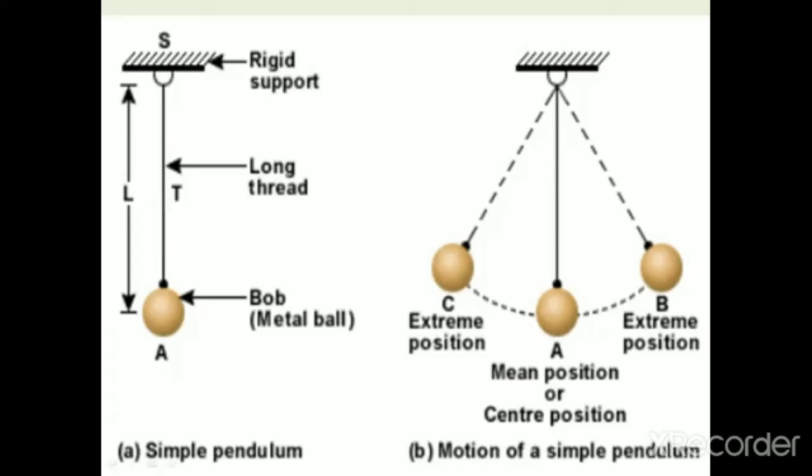One oscillation will be complete when this pendulum moves from B to C and then again comes back to A. Then we say that it has completed one oscillation.